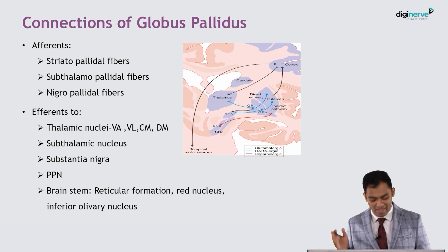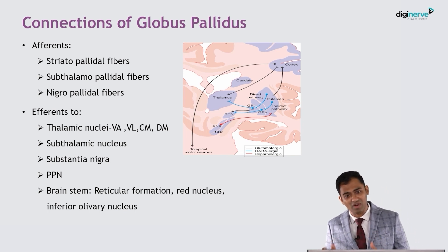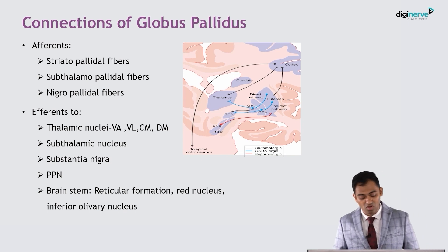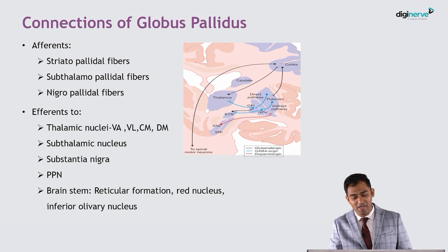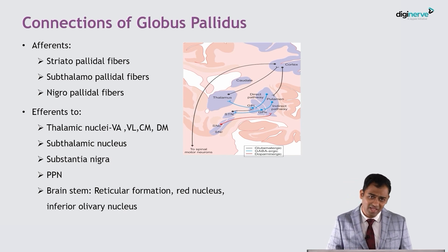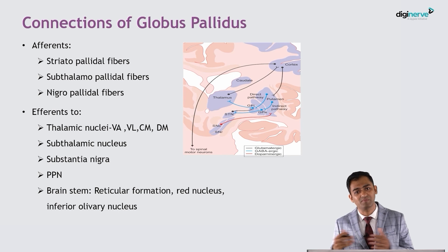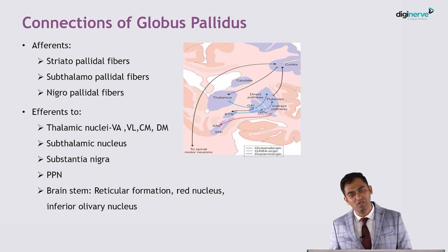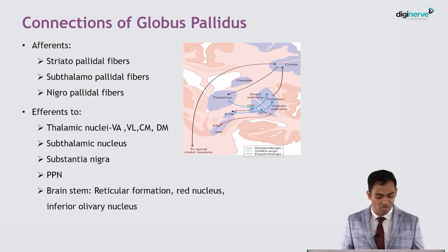The globus pallidus will give efferents to the thalamus — mainly the ventro-anterior, ventrolateral, centromedian, and dorsomedial nuclei — via the pallidothalamic projections. It will also give efferents to the subthalamic nuclei, the substantia nigra, the pedunculopontine nuclei, and to the brainstem — including the reticular formation, red nucleus, and the inferior olivary nucleus.